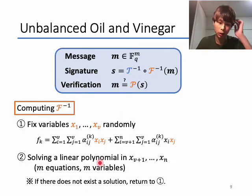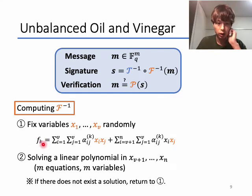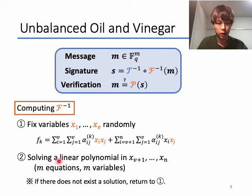This is how to invert the central map F. First, we fix the values of variables x1 to xv randomly. By doing so, each component Fk of the central map F is transformed so that the quadratic part becomes constant, and the remaining part becomes a linear term in all variables from xv+1 to xn. So in the second step, we can solve the resulting linear system in M variables from xv+1 to xn.